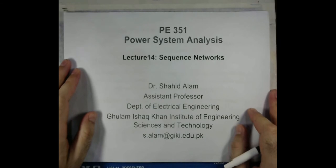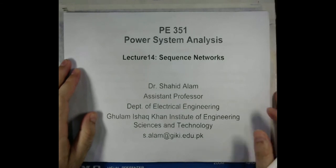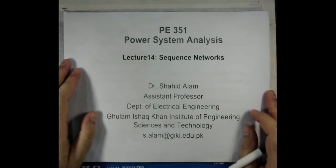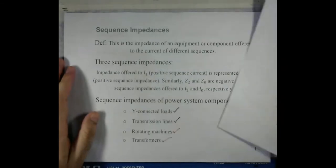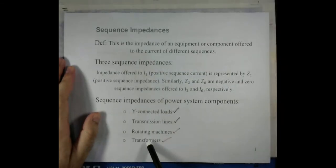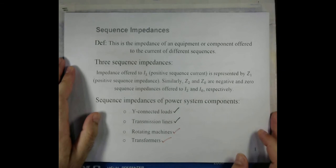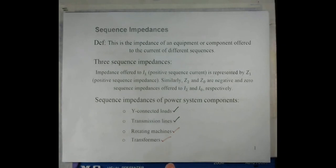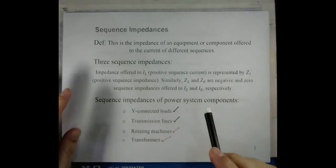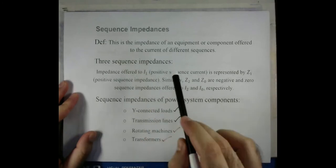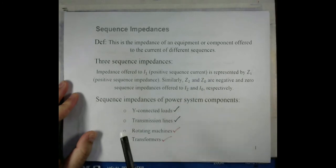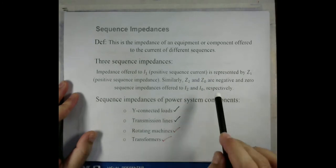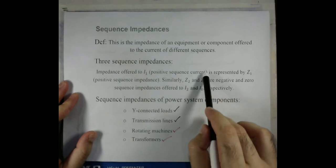Welcome back dear students. In the last couple of lectures, I discussed the sequence networks of these four components of power systems. The major observations were that the positive and negative sequence current do not flow through the zero sequence impedance. It is only the zero sequence current that flows through the zero sequence impedance.